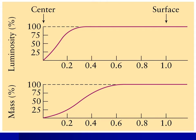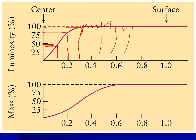Luminosity is how much energy is passing you at a given point. If you're a tenth of the way out from the center of the sun, a little less than half the sun's energy passes you. About a fifth of the way out, roughly 80% of the energy passes you. By about a third of the way out, pretty much all the sun's energy is passing you. This tells us that all the nuclear fusion is happening in the innermost one-third of the sun's mass.